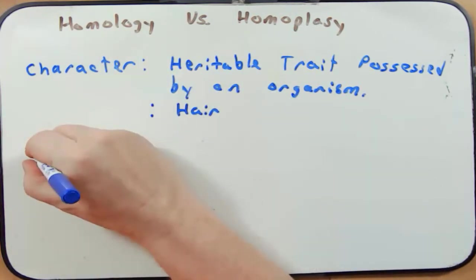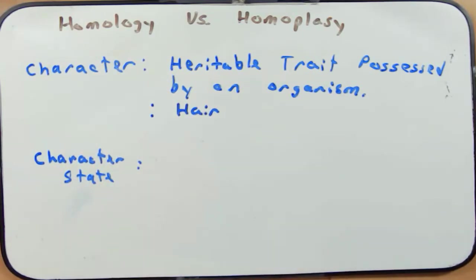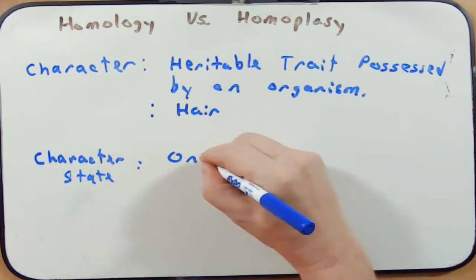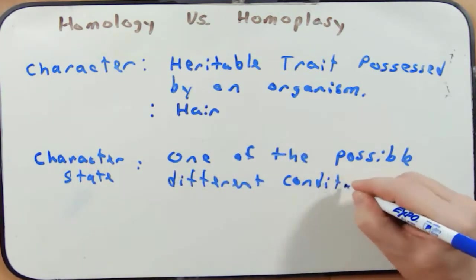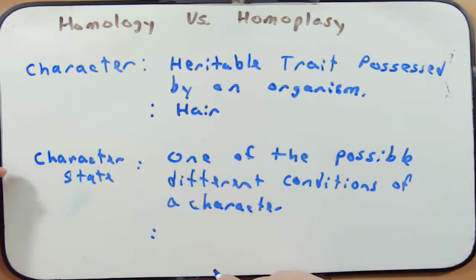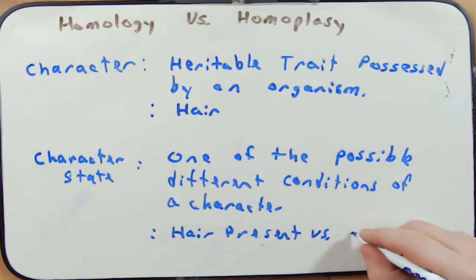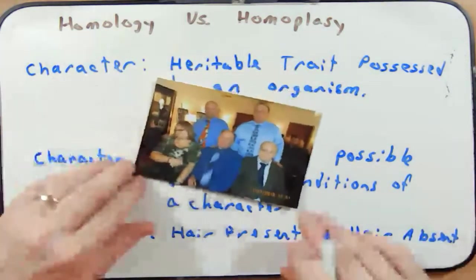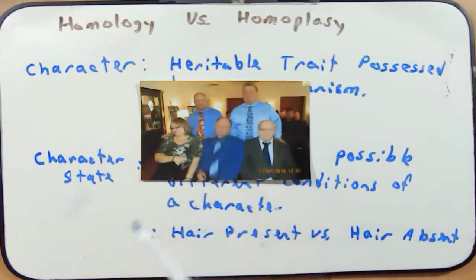Now let's think about the term 'character state.' This is one of the possible different conditions of a character. So as an example, if hair is a character, a character state would be hair present versus hair absent. Here's a picture of my family — this is me and this is my brother. I have no hair; he has hair. That would be the character state of hair between myself and my brother.